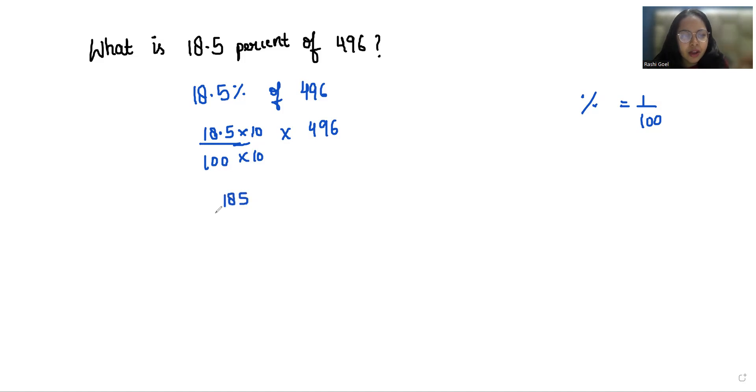It becomes 185 by 1000 times 496. Now we are going to reduce the fraction by dividing both by 5.